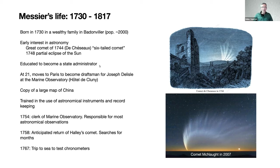His first assignment was to copy a large map of China, large enough that he had to work in a long hallway. While working on this project, he was also trained by De Lille to use astronomical instruments and record-keeping of astronomical observations. Three years later, he became a clerk of the Marine Observatory and was responsible for most astronomical observations there. In 1758, there was the much-anticipated return of Halley's Comet, and he would spend months looking for it, eventually finding it.